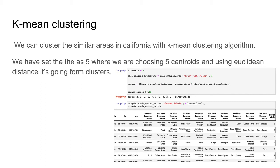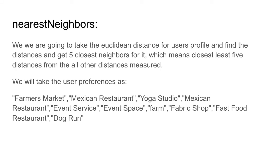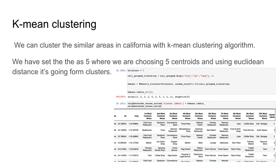We are going to use K-means clustering to cluster similar cities that have similar venues inside them. We can cluster similar areas in California using the K-means algorithm with K set to five, choosing five centroids and using Euclidean distance to form five clusters — five similar groups. We then visualize the clusters using Folium, with each group shown in a different color.